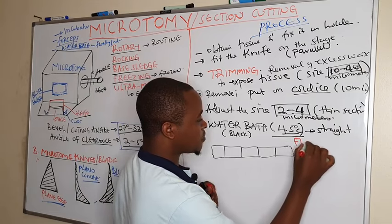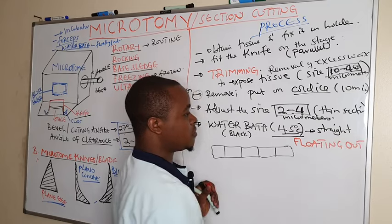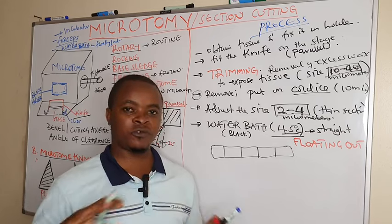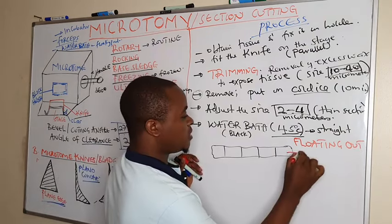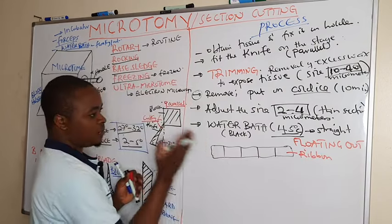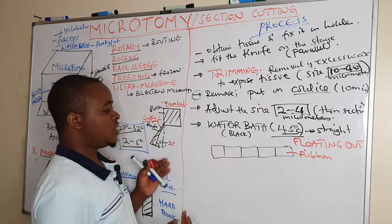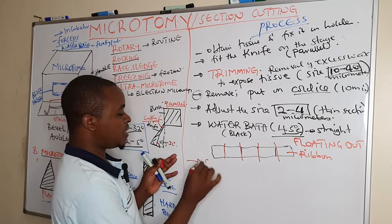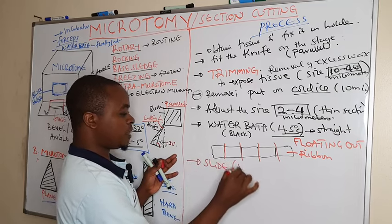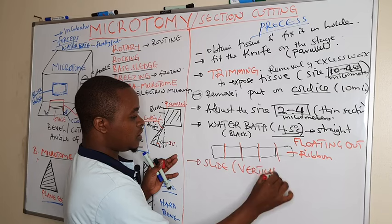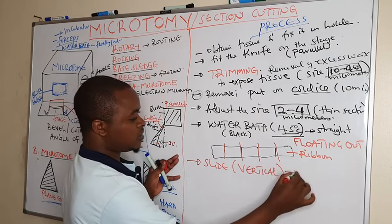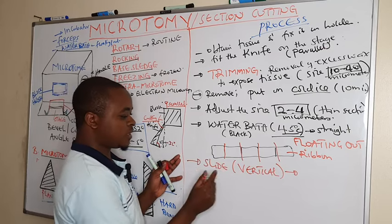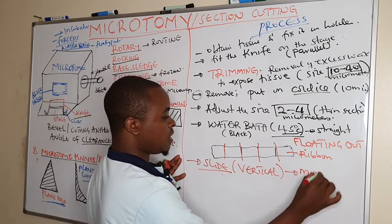The major significance of froting out is to straighten the ribbon or to remove any wrinkles or folds within the ribbon. After placing the ribbon in the water bath, we use forceps to cut the ribbon into different sections. We then obtain a microscope slide and press it vertically in the water bath to mount these sections on the slide.